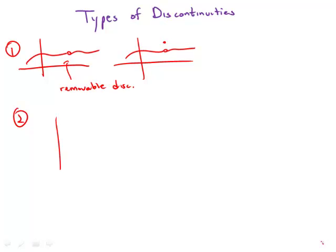Type two, which we've talked about already, is a jump discontinuity, and of course the function might not be defined at all at that point.